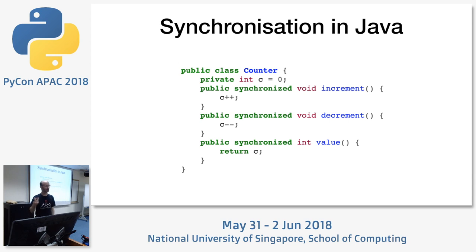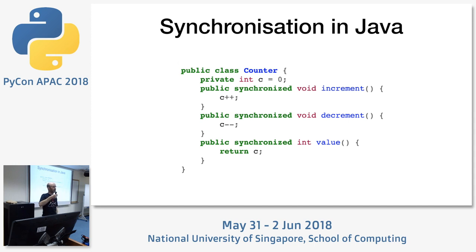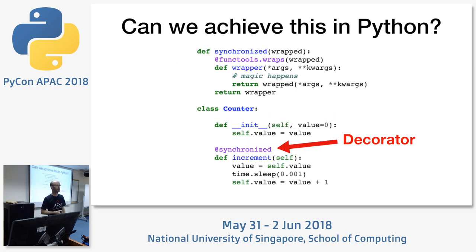In other languages, there is support built into the language for this sort of thing. In Java there is a keyword called `synchronized`. Rather than having to create individual lock objects wherever you need them, you can just put a `synchronized` keyword on the methods of a class. When those methods run, it locks the instance of the class that the method is on. So how can we bring this to Python — have a decorator that works similarly to Java's `synchronized` keyword?